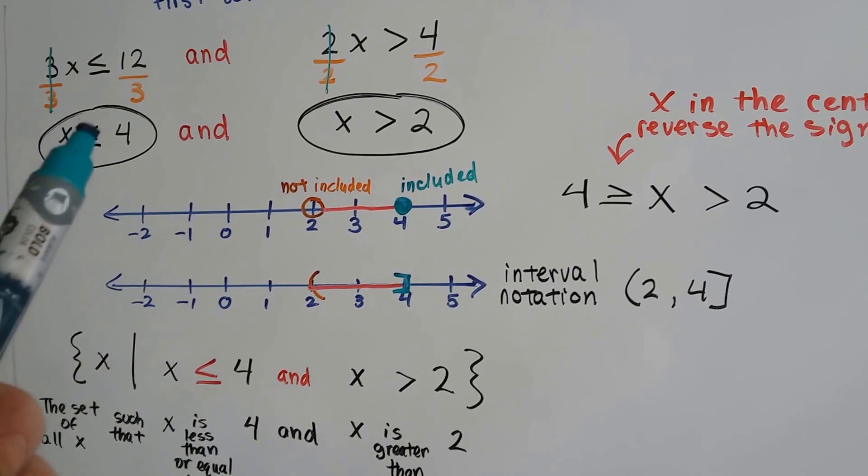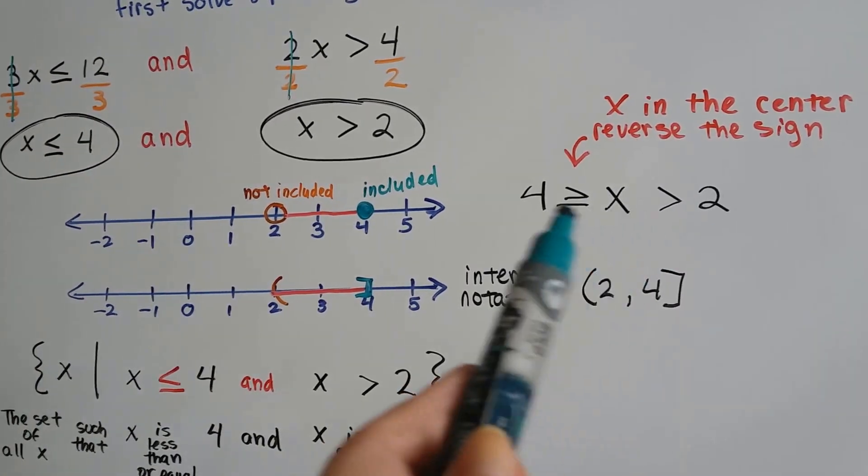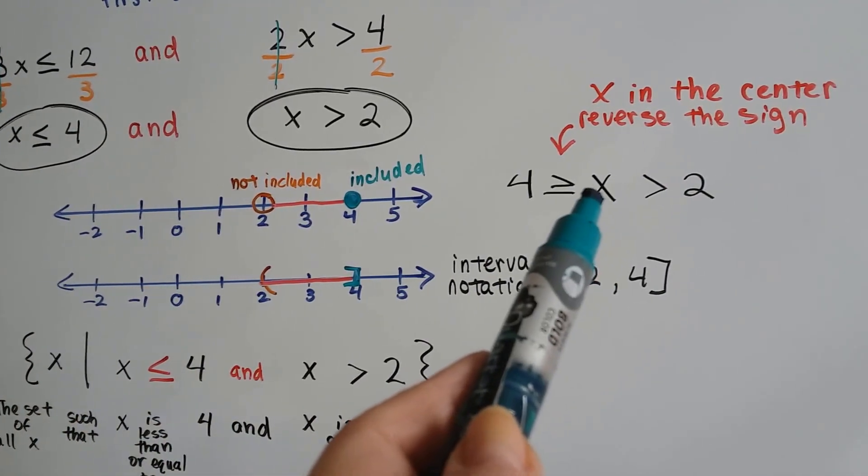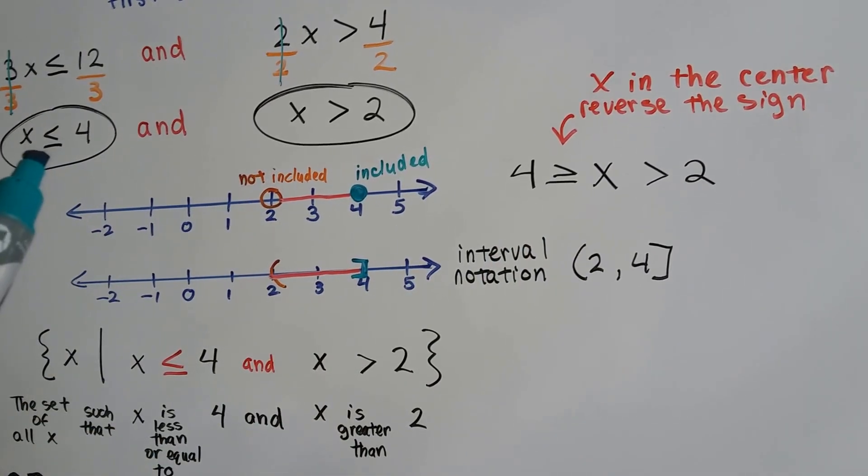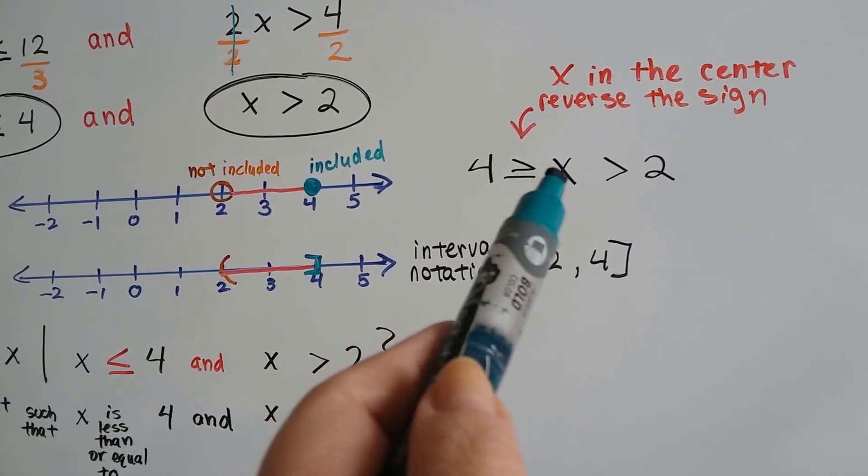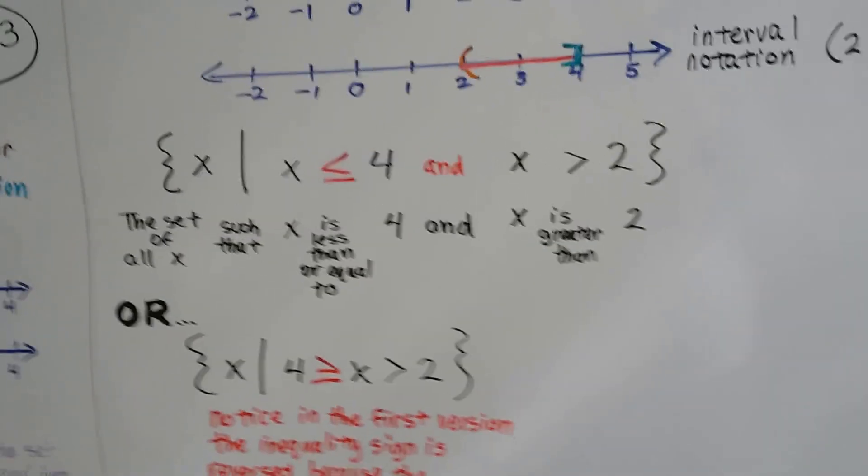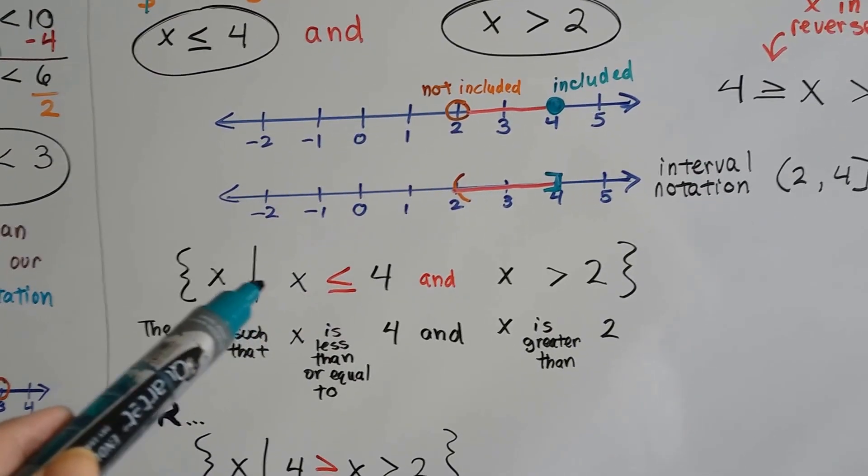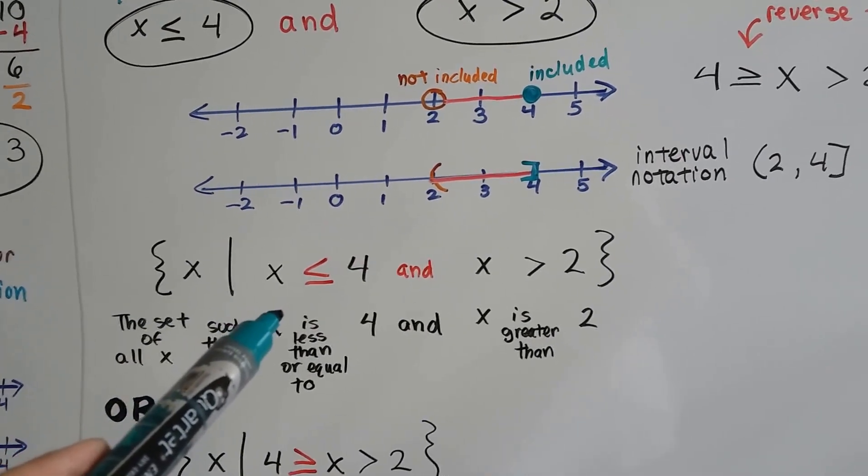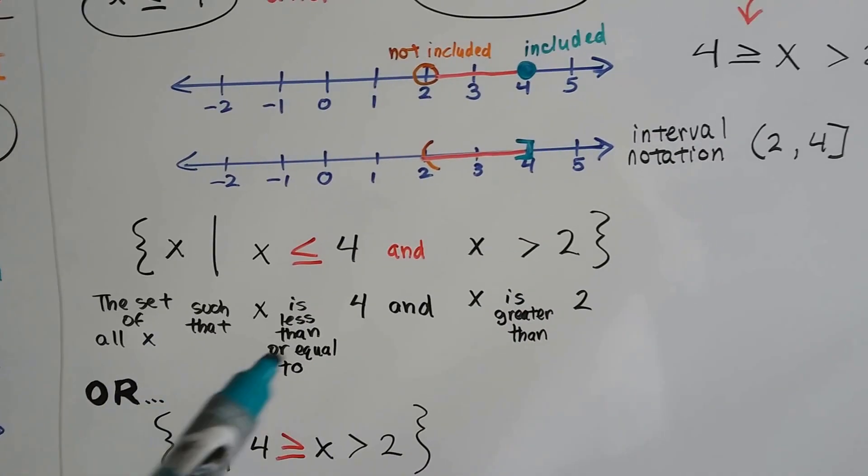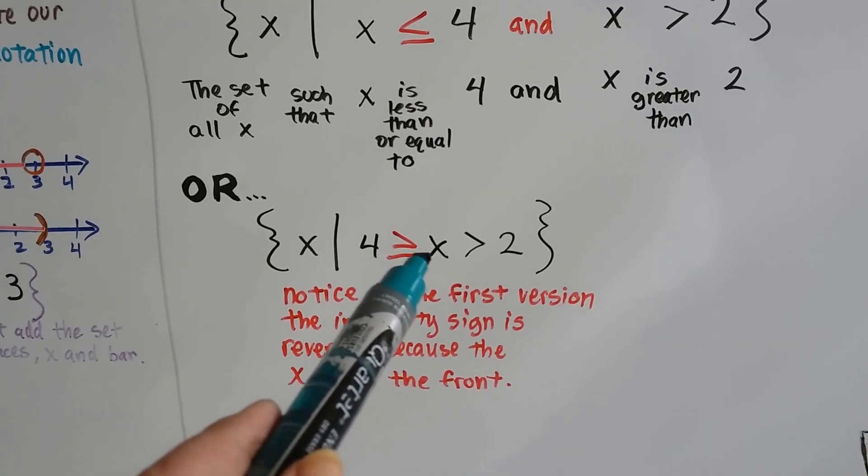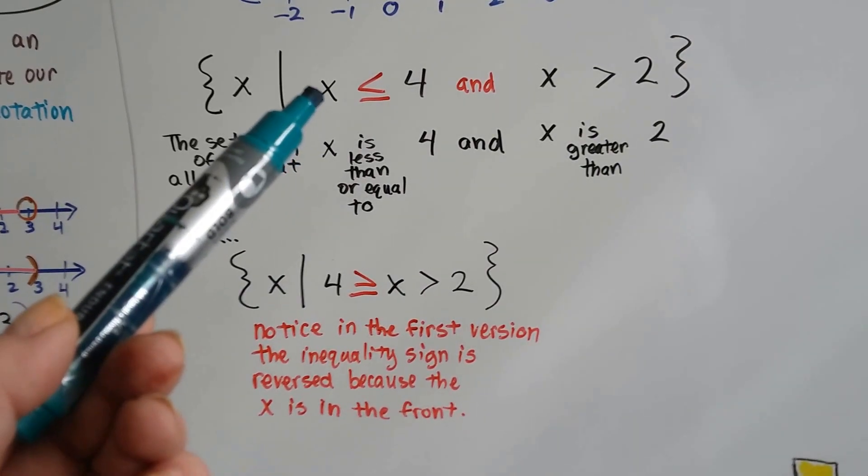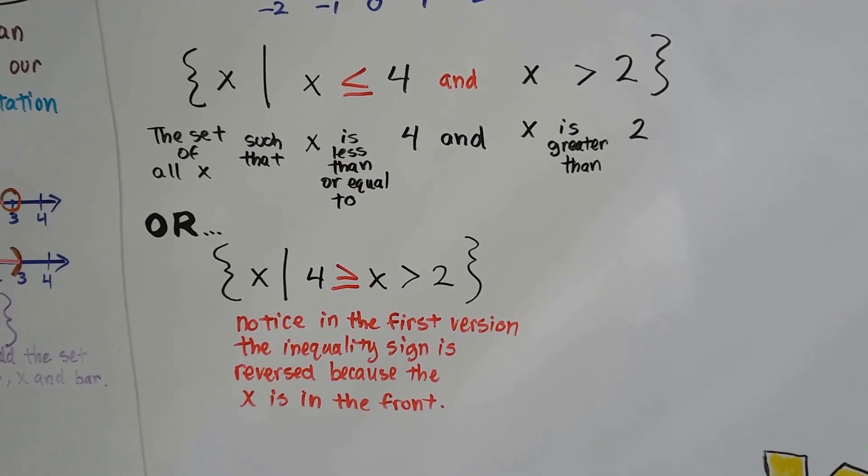Now, I want you to look at this. It says x is less than or equal to 4, and when we write the answer, we reverse the sign because the x is now in the center. The x is up front here. We want the x in the center. So we have to reverse this sign because x is less than 4. If the x is in the center, the less than has to be facing the x. So the sign got reversed. So in set builder notation, we can write it with the x and the less than or equal to going this direction. If we write it as the set of all x such that x is less than or equal to 4 and x is greater than 2, if we just want to write it this way, then we have to have that sign flipped around. Because it's got to be with the less than part facing the x. And the first version of the inequality sign is reversed because the x is in front right here. When we put the x into the center, we've got to flip that inequality sign around.